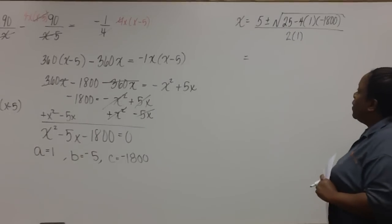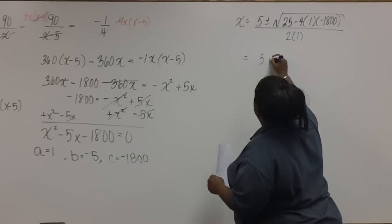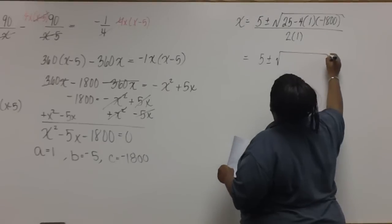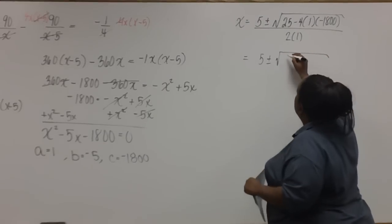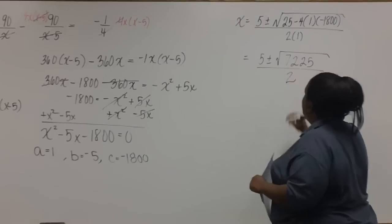Now we need to simplify under the radical. After simplifying under the radical, you should get 7225, all divided by 2.